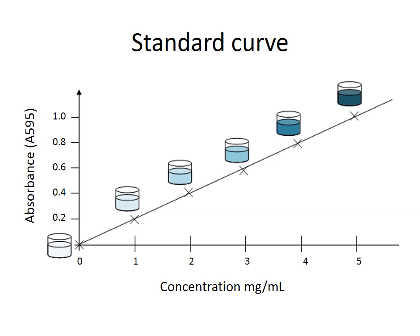You need to plot absorbance against concentration, as shown in the standard curve here. On the x-axis we have concentration in milligrams per milliliter — that is what you have changed in your standards — and what you measure is the absorbance, in this case at 595 nanometers. As the concentration increases the absorption increases. There are two ways to use this standard curve: you can read directly off the graph, or you can calculate the gradient in the format y = mx + c and rearrange for x to find the concentration.